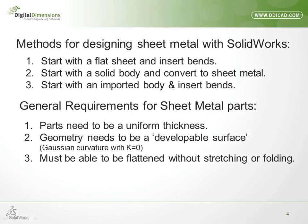A third approach would be to create or obtain an imported body and then insert bends. Some of the ground rules you need to be aware of for sheet metal in SOLIDWORKS are that the parts need to be uniform thickness and that the geometry needs to be a developable surface, meaning it must be able to be flattened without any stretching or folding.